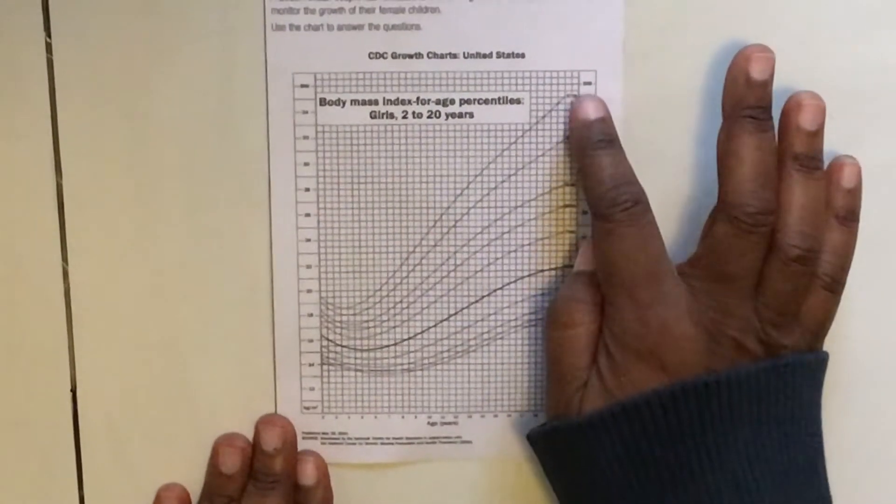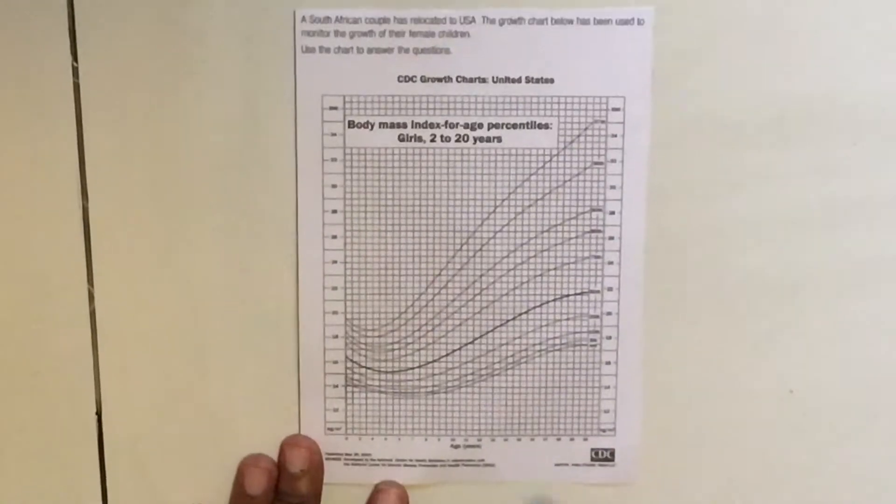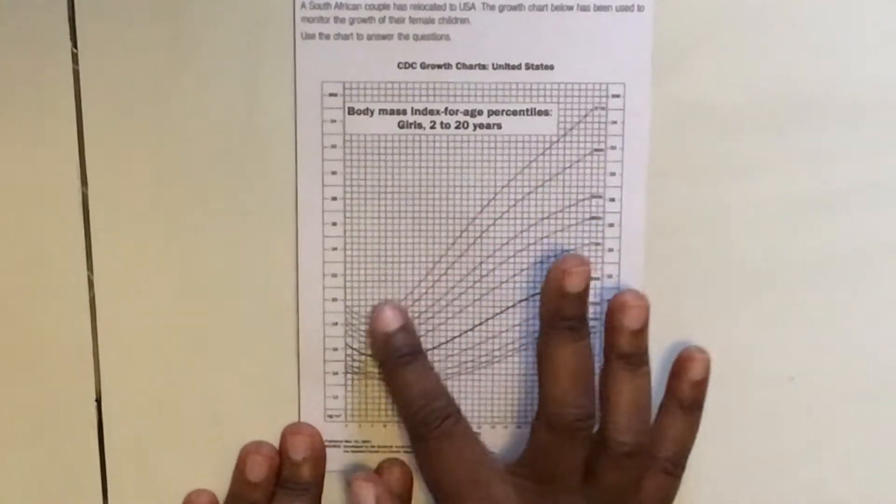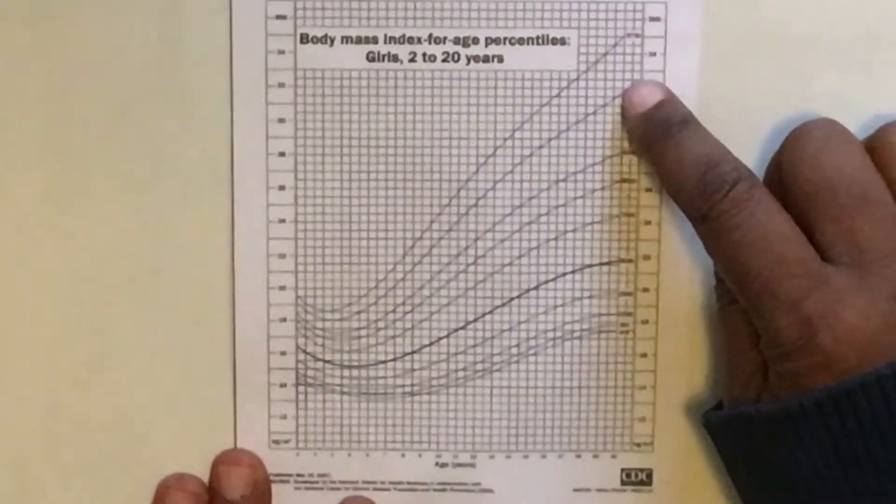On the upright one they're giving you the body mass index, and then on the bottom they're giving you the age. And then you have these lines that are tilted like that, but everything is written on this chart.